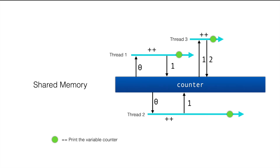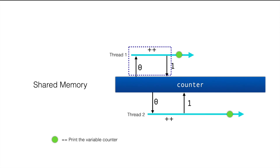Now we know what the problem is. If you only care that each thread should increment the number exactly once with no duplicate work, then we need the three operations — get, increment, and write — to happen as one atomic unit. When one thread is doing those three operations, it should have exclusive access to the counter. If another thread comes to read the counter, it has to wait. This guarantees all threads will increment the number once, with no duplicates and no missing numbers.